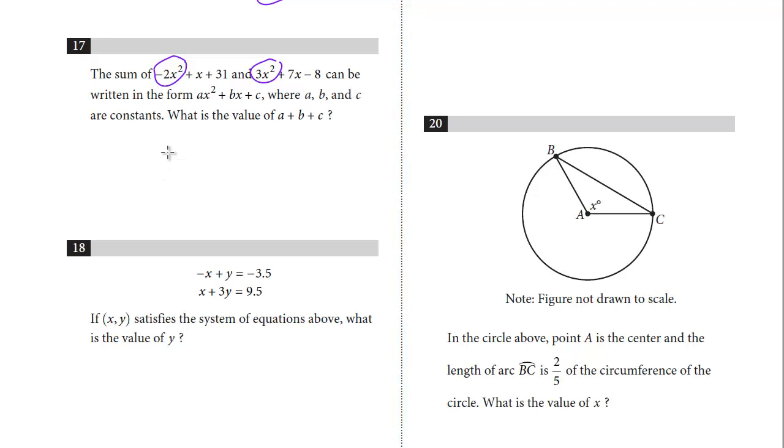Let's start with the second degree term. We have negative 2X squared and 3X squared, so that's just going to be a single X squared. Now we'll do the X's, 1X plus 7X. We know that is 8X, and now we'll do the constants.